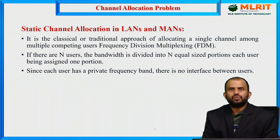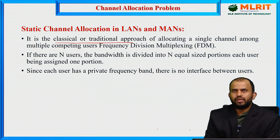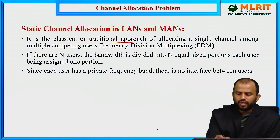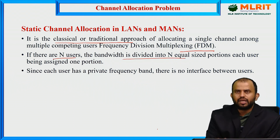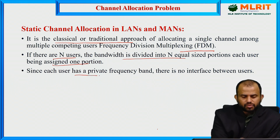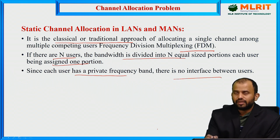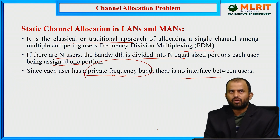In static channel allocation, we maintain fixed minor values while allocating the channel from users, following a classical or traditional approach. Each single channel is divided among multiple competing users. We implement the Frequency Division Multiplexing mechanism so that if N users are present, the bandwidth is divided into N equal portions, each user assigned one portion. Each user has a private frequency band, which is a major advantage, but assigning the private frequency band based on frequency structure is a difficult problem in static channel allocation.